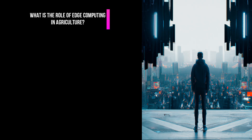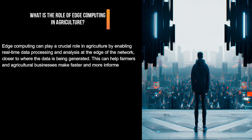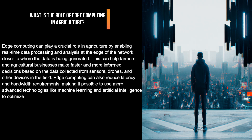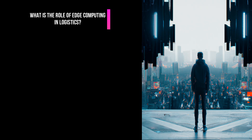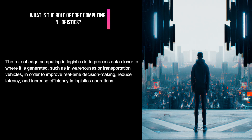What is the role of edge computing in agriculture? Edge computing can play a crucial role in agriculture by enabling real-time data processing and analysis at the edge of the network, closer to where the data is being generated. This can help farmers and agricultural businesses make faster and more informed decisions based on data collected from sensors, drones, and other devices in the field. Edge computing can also reduce latency and bandwidth requirements, making it possible to use advanced technologies like machine learning and AI to optimize agricultural processes and increase yields. In logistics, edge computing processes data closer to where it is generated, such as in warehouses or transportation vehicles, to improve real-time decision-making, reduce latency, and increase efficiency.